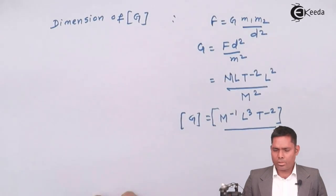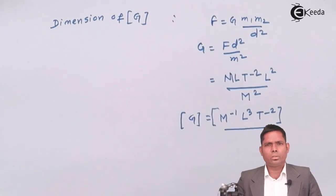So this is the dimension of the gravitational constant. So we have got the dimensions, units and the statement of Newton's law of gravitation. So that is all in this video. Thank you.